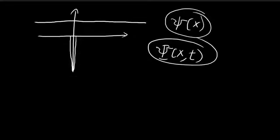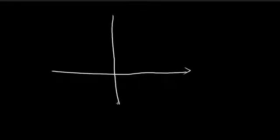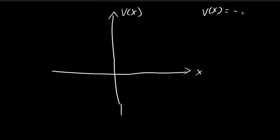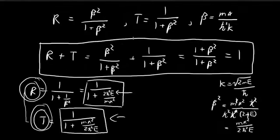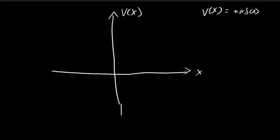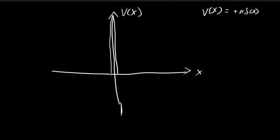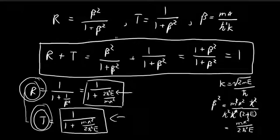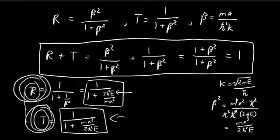One final thing to point out is the phenomenon of quantum tunneling, which we can demonstrate through this example. Recall that the potential we've been considering is negative alpha times the delta potential. We can also apply all these results for a potential with a positive alpha instead — a delta barrier rather than a delta well. In a graph, instead of an infinitely sharp spike pointing downwards, this time it's a wall pointing upwards. If you go through all the same steps from the past few videos, you obtain the exact same reflection and transmission coefficients.